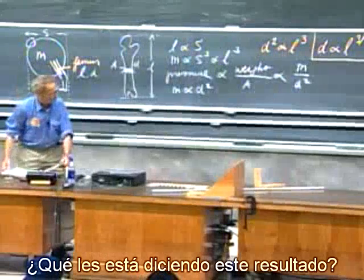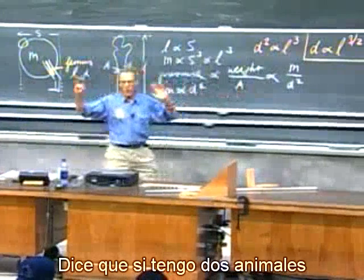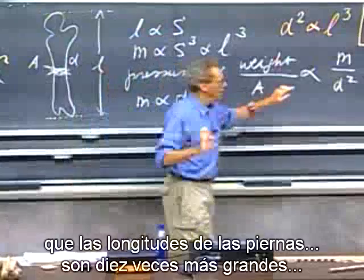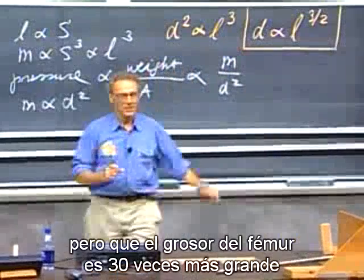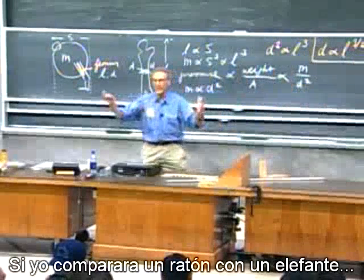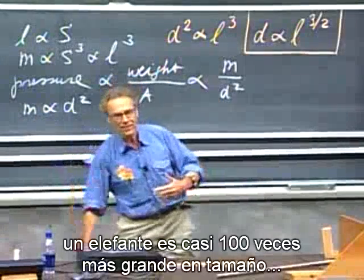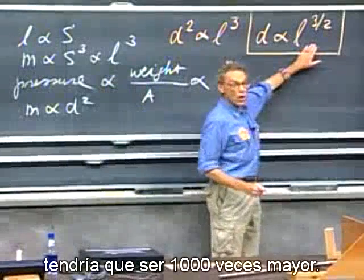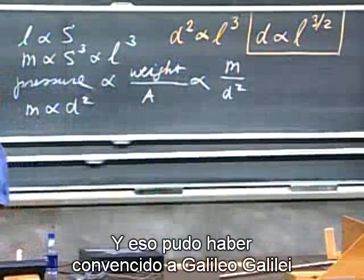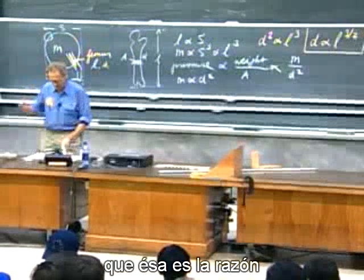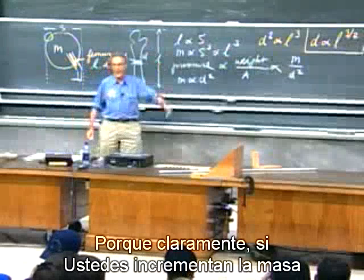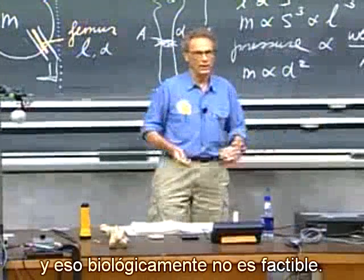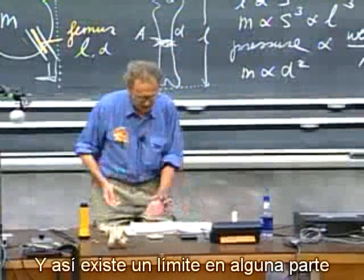What is this result telling you? It tells you that if two animals differ in size by a factor of ten — so lengths of legs are ten times larger — the thickness of the femur must be thirty times larger, because D scales as L^(3/2). Comparing a mouse with an elephant, an elephant is about 100 times larger in size, so the femur length is 100 times larger, but the thickness would have to be 1,000 times larger. This may have convinced Galileo that there is a limit: if you increase the mass enough, the thickness of the bones becomes equal to their length, which is biologically not feasible.